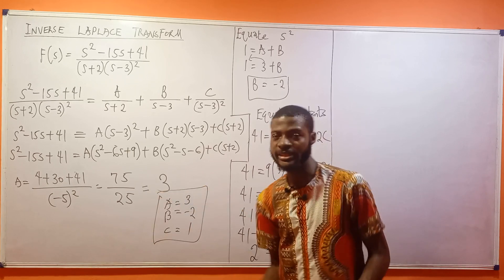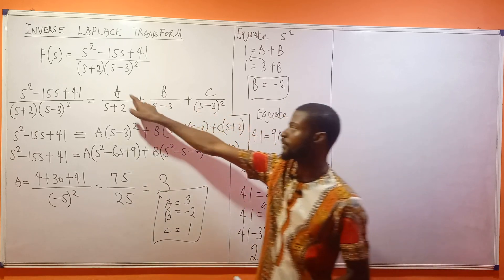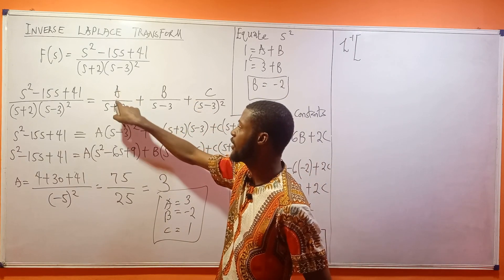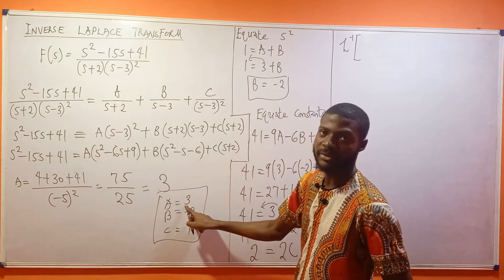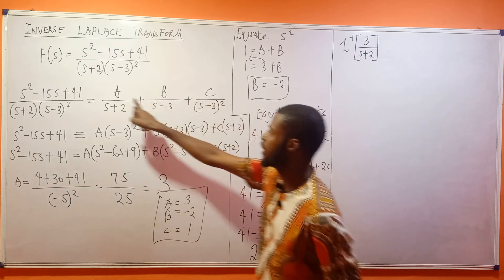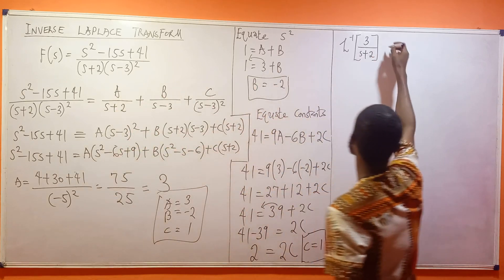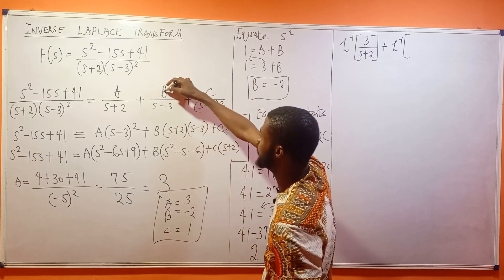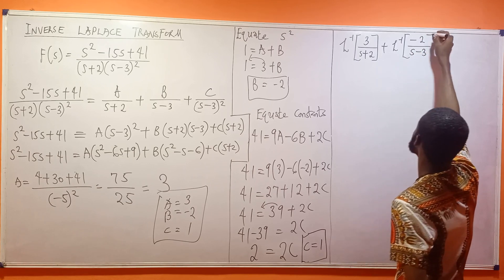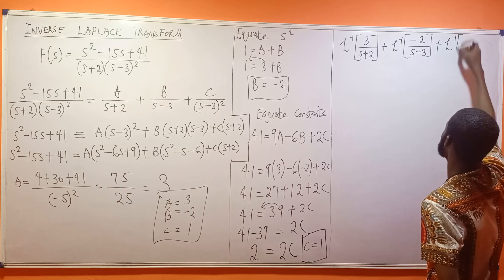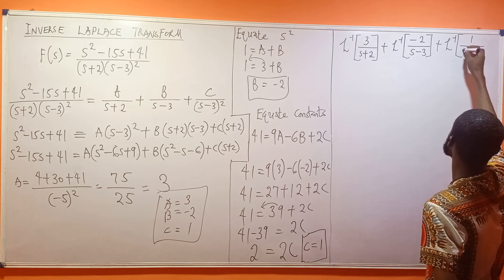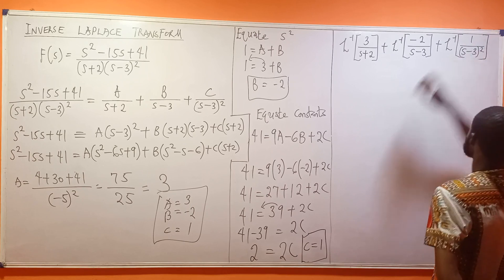Going back into the expression, the inverse Laplace transform becomes: inverse Laplace of 3/(s+2), plus inverse Laplace of (-2)/(s-3), plus inverse Laplace of 1/(s-3)².